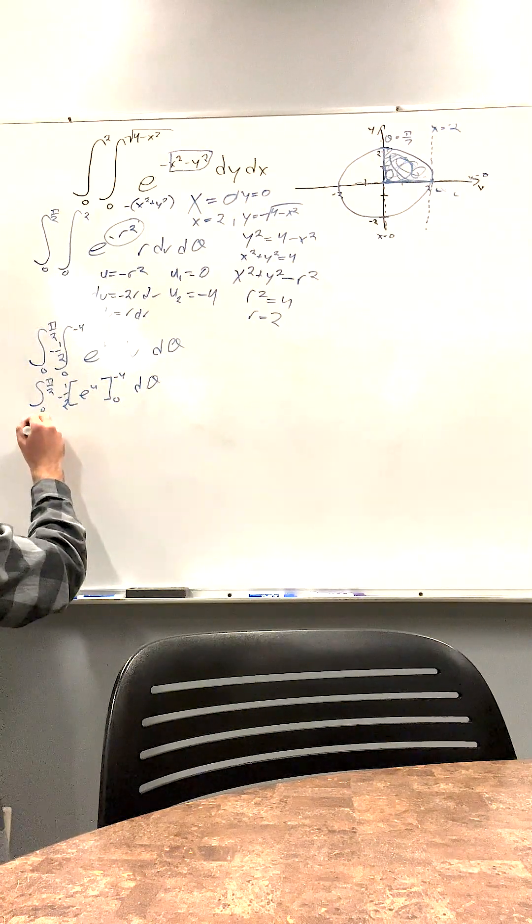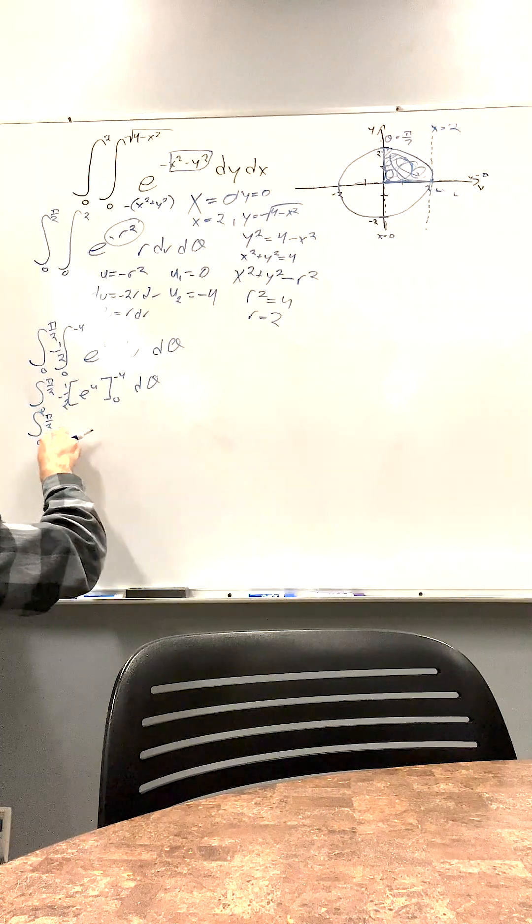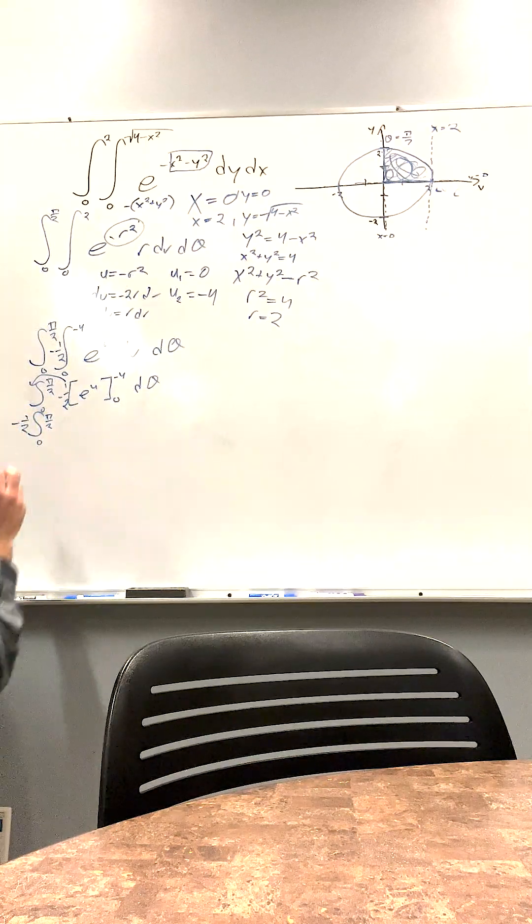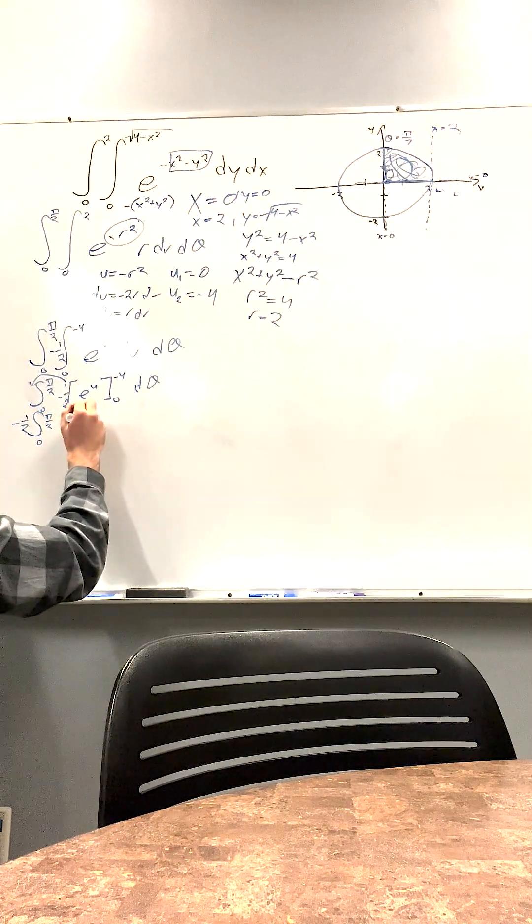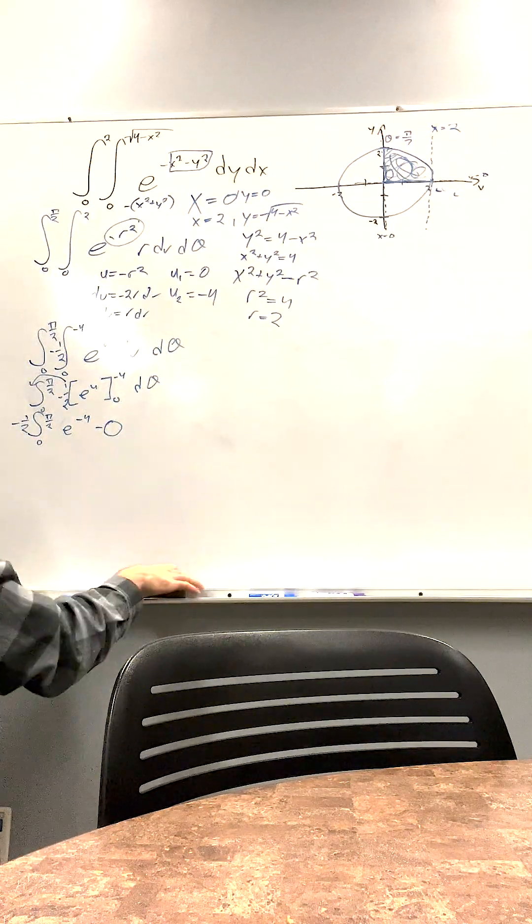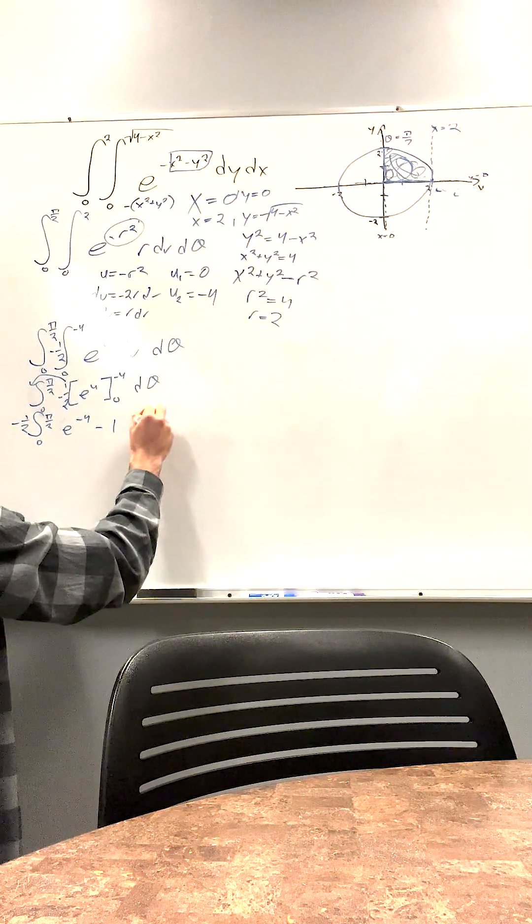We have to do this. Now this negative 1 half can actually come all the way out front of here. So negative 1 half, e to the negative 4, e to the 0. This is the 0, or negative 1. e to the 0 is 1, d theta.